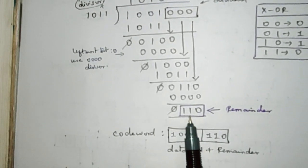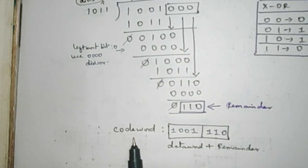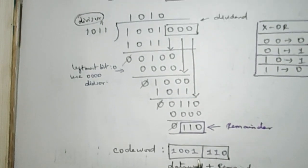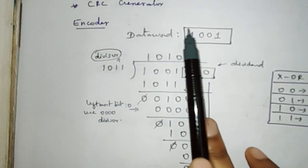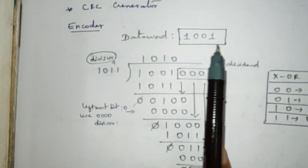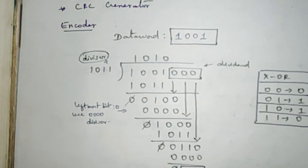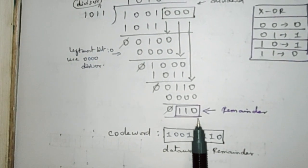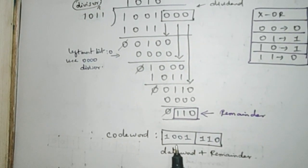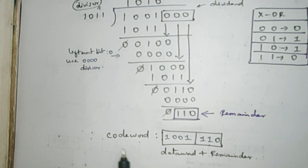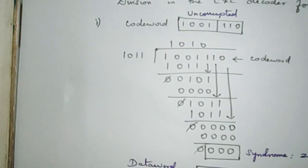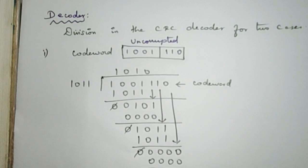Now we are going to append this remainder to our data word to form the code word. Our data word is 1001, which is the data we are going to transmit from one end to another. The remainder we got through this division is 110, and we are going to append it to the data word. So data word plus remainder forms our code word.